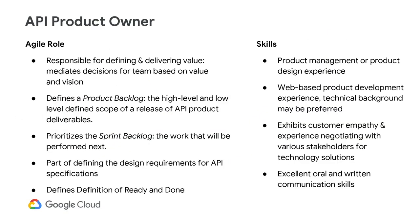To summarize the role more concretely, the API product owner, or PO as often called, is responsible for the following: defining and delivering value by making decisions for the team on what's more valuable; defining the product backlog; prioritizing the sprint backlog; and defining requirements as well as the definition of ready and done. Because of the cross-functional demands, a background in product management and web-based technology is a key skill set.